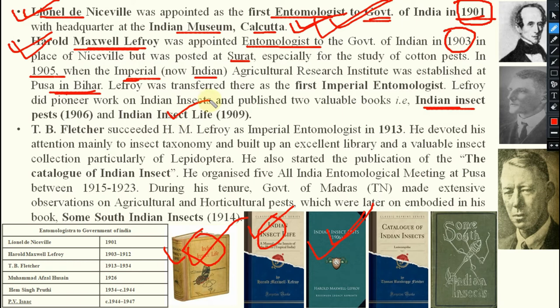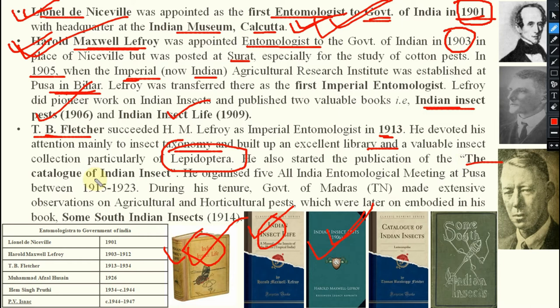TB Fletcher succeeded HM Lefroy as Imperial Entomologist. He was the third entomologist but second Imperial Entomologist to the Government of India, appointed in 1913. He devoted his attention mainly to insect taxonomy, built up an excellent library and insect collection particularly of order Lepidoptera (moths and butterflies). He started publication of the 'Catalogue of Indian Insects,' organized five All-India Entomological Meetings at Pusa, Bihar between 1915 to 1923, and wrote a book 'Some South Indian Insects.'